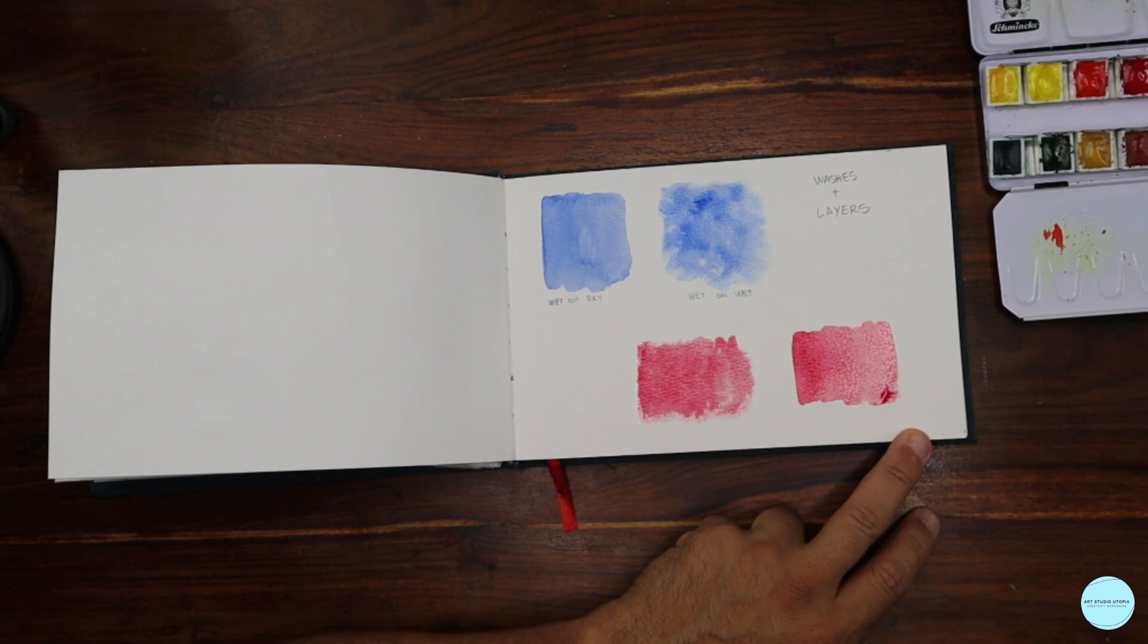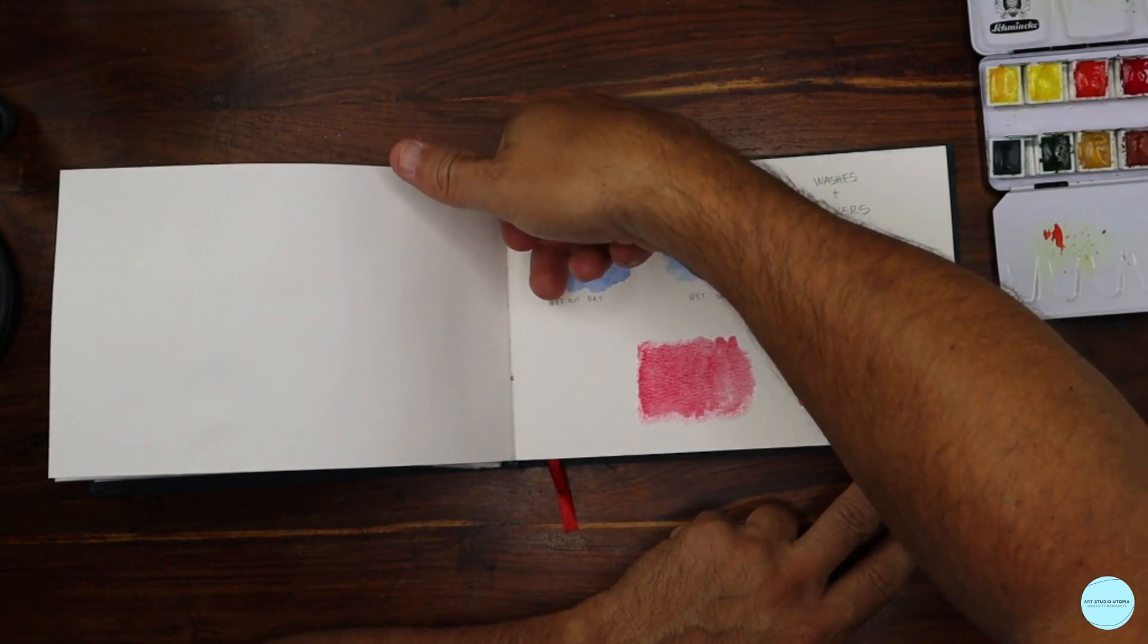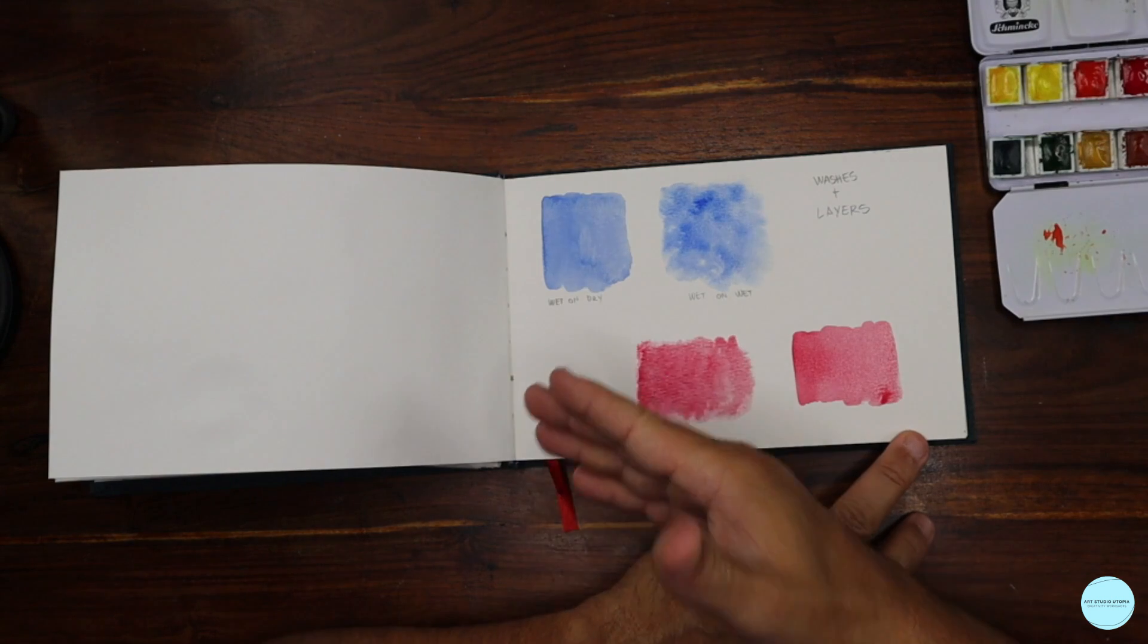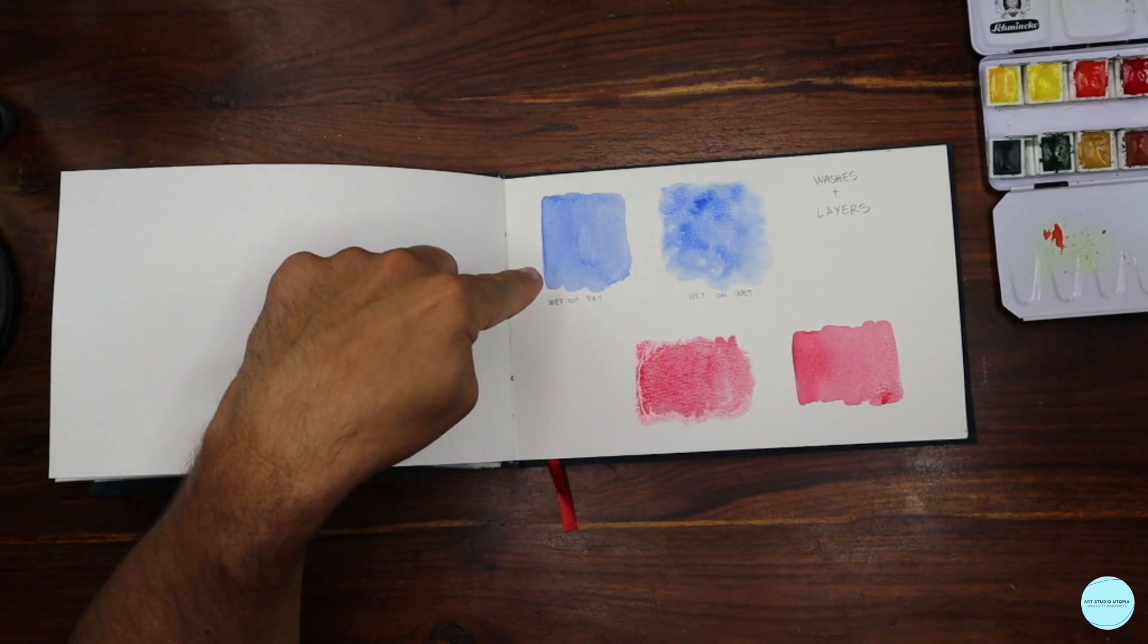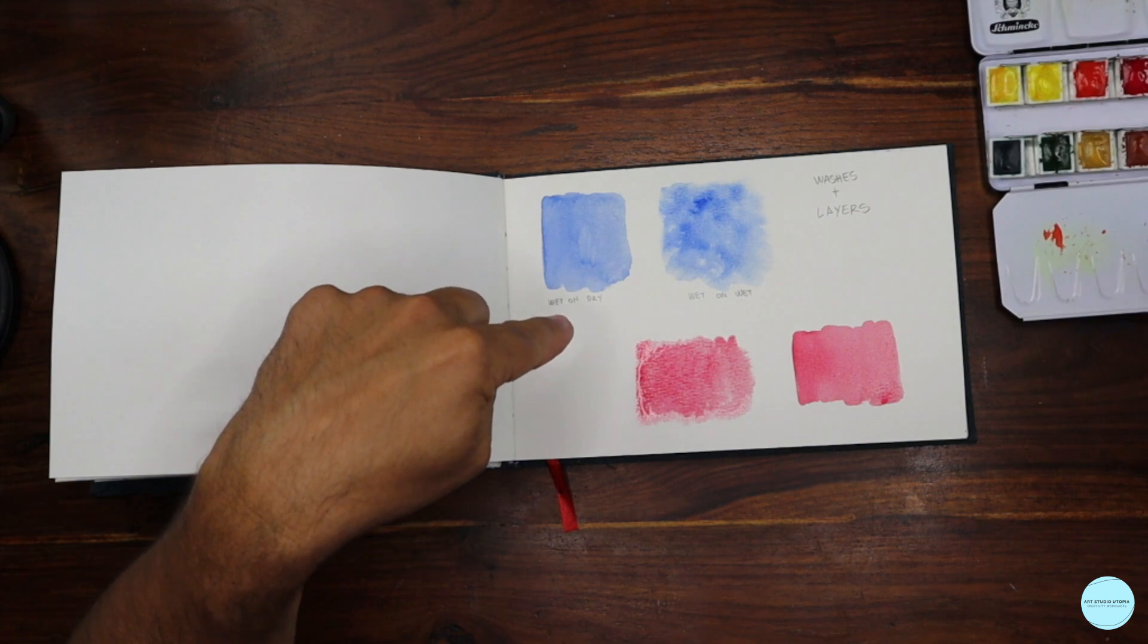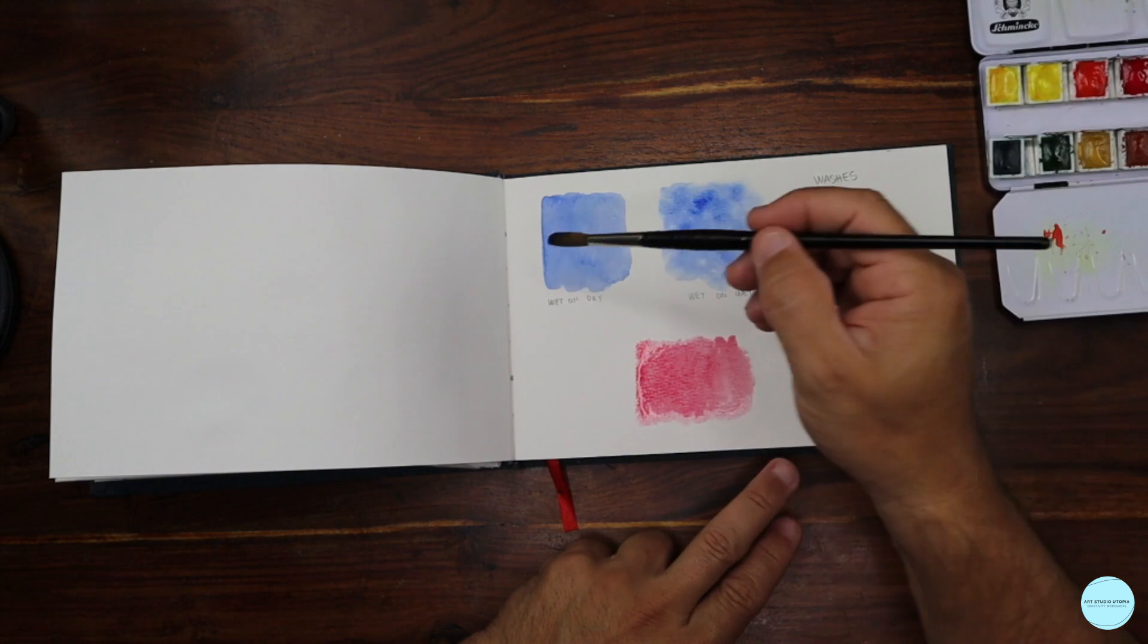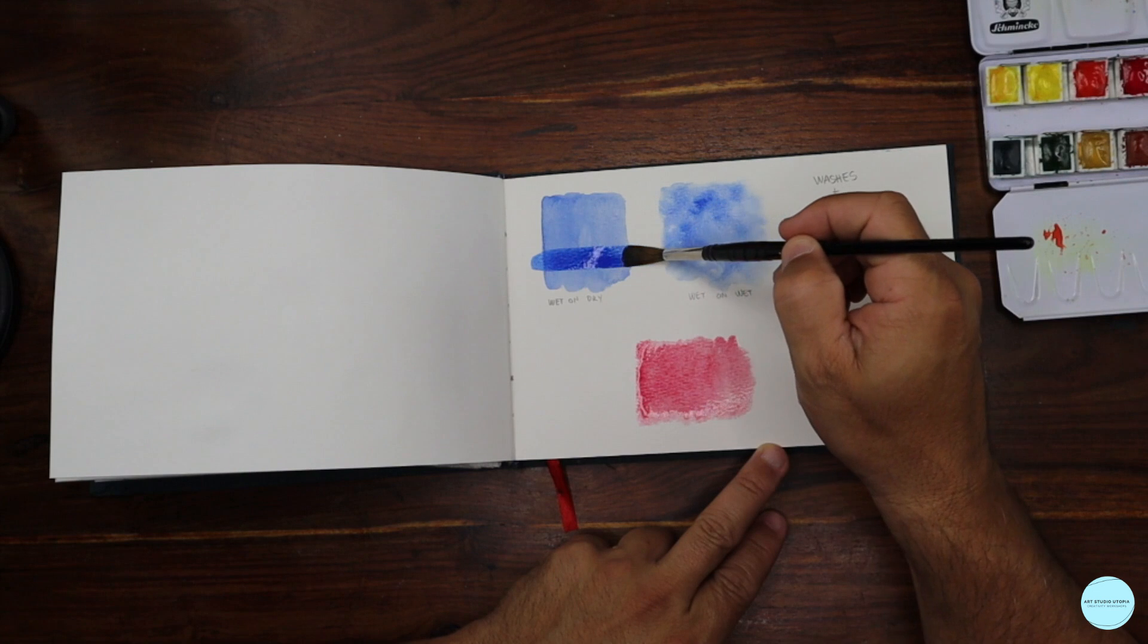Now there's a thing a lot of watercolor artists use, which is a hair dryer or blow dryer, to actually speed up the drying process. And before you lay down a layer over a wash, the one thing that is very important is that you make sure it is absolutely dry. So this one is dry enough, and just because we need to move on, what I'm going to do is I'm just going to do a wet on dry layer over it.